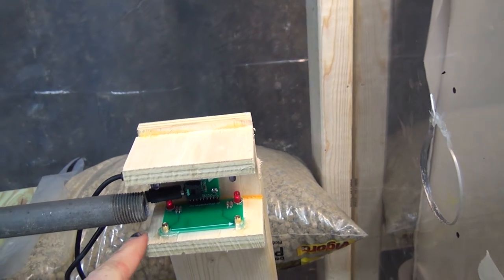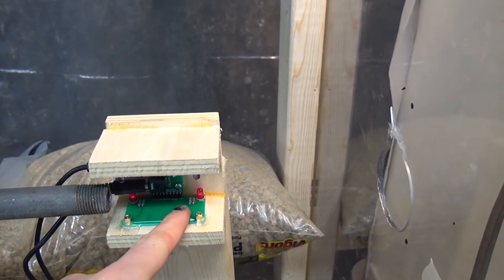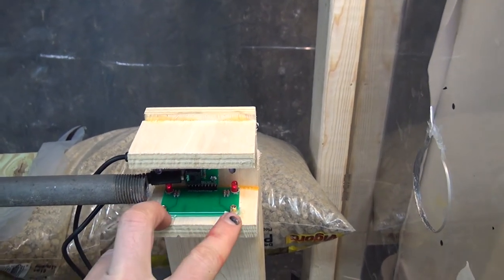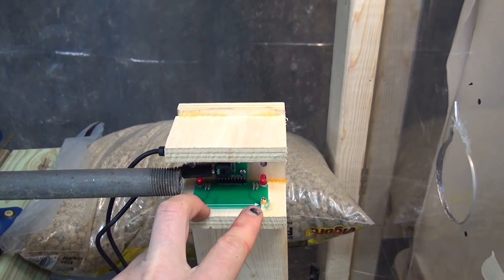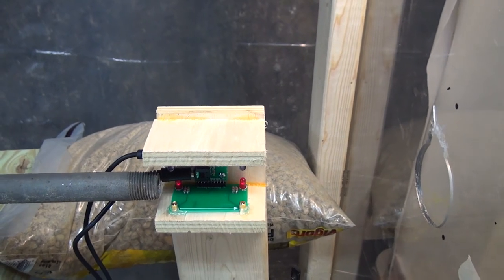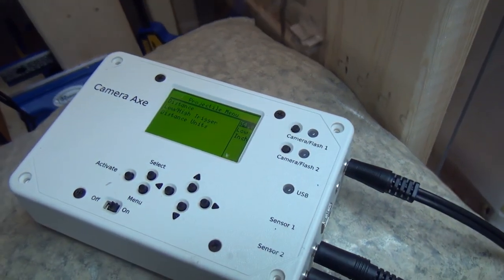And then basically the way this projectile sensor works is the bearing goes past here and has a trigger and then it goes past here and does a trigger. It figures out how fast the ball bearing is going and from that velocity it can then compute how much time to wait before triggering the flash. And all of the intelligence is handled with the camera axe here.